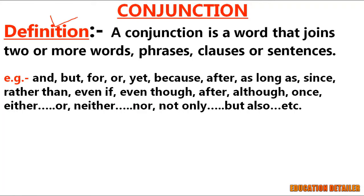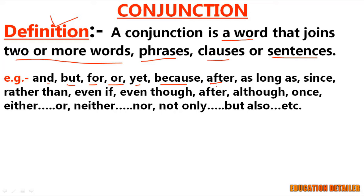Let's start with the definition. A conjunction is a word that joins two or more words, phrases, clauses, or even sentences. And, but, for, or, yet, because, after — all these are called conjunctions.